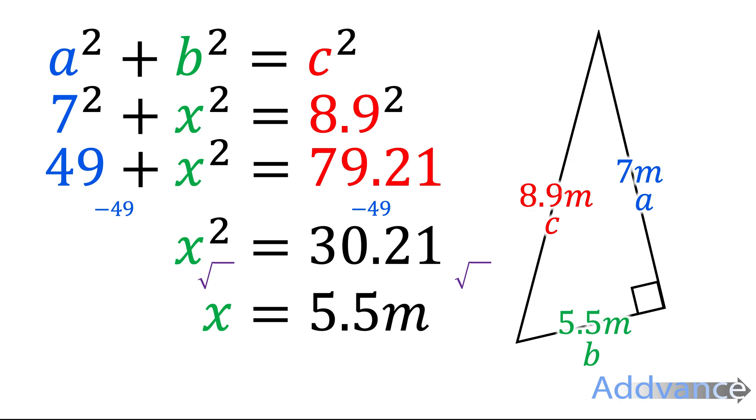That's Pythagoras' Theorem. That's how we work out missing sides in a right-angled triangle. You will use this every time you have a right-angled triangle, and you have two lengths labelled, and you want to find the third missing length.